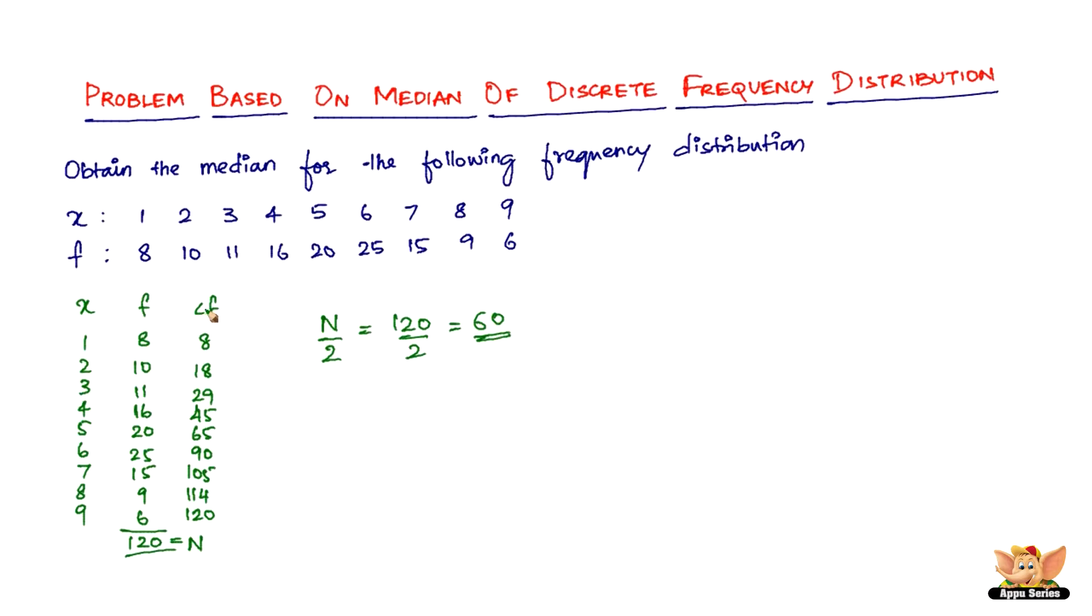We get 65. So the variate corresponding to 65, the x corresponding to 65, is the median. Therefore 5 is the median of the given discrete frequency distribution.